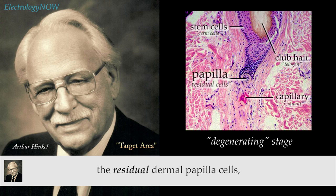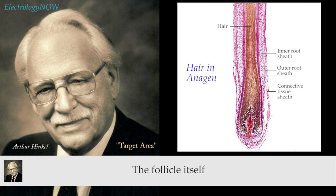It all degenerates down to just a few remaining cells — these are the residual dermal papilla cells, which remain in the lower portion. The follicle itself consists of the hair, the inner root sheath, and the outer root sheath. When the hair leaves this area, we now have the outer follicle wall — the outer root sheath, which is the follicle wall.